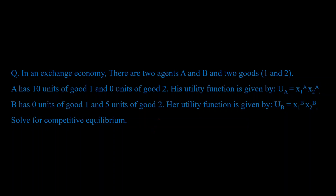Let's solve for exchange equilibrium. You're given an exchange economy with two agents A and B, two goods one and two. A's initial endowment is 10 units of good one and zero units of good two, and B's initial endowment is zero units of good one and five units of good two. You want to solve for competitive equilibrium — meaning how much of each good will A and B have, and what will be the prices in the economy.